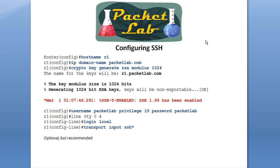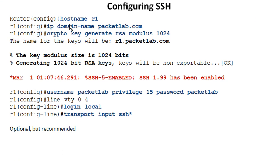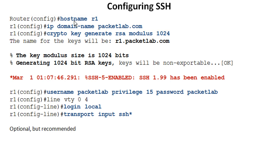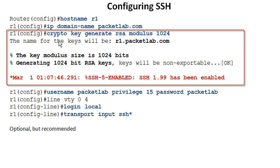Before we get into the SDM, let's look at the configuration as entered on the CLI. The first two steps are: configure a hostname — in this case R1 — and configure a domain name — in this case Packet Lab. Those two pieces of information are used to name the key. The command is 'crypto key generate rsa', then you specify the modulus. You can hit Enter and it will prompt you. Cisco recommends 1024; the default may be 512. Once the keys are generated, you are technically running SSH.